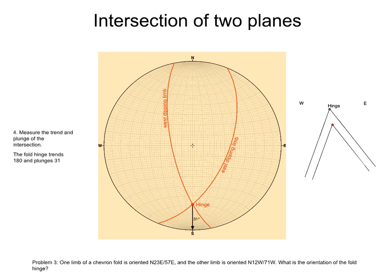Therefore, the hinge trends south, 180. The plunge of the hinge can be found by counting from the hinge to the primitive along a straight line in the grid. The plunge is 31.